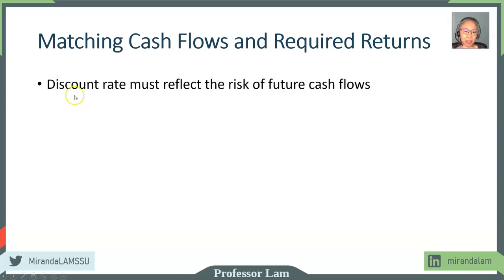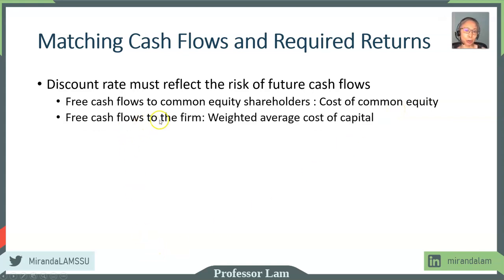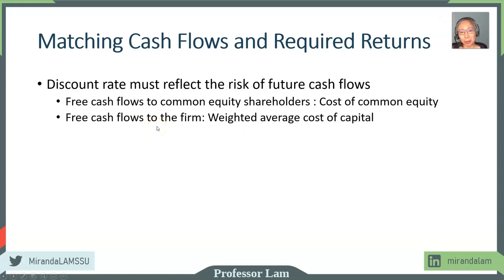The principle is that the discount rate must reflect the risk of the cash flows. If our cash flow is to equity holders, then we need to use cost of common equity. If we are using free cash flow to all the stakeholders in the firm, then we will use the weighted average cost of capital, which takes into account cost of debt, cost of preferred stock, cost of non-controlling interest, and cost of common equity.